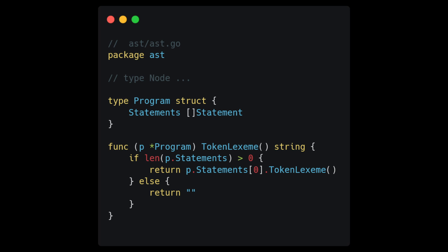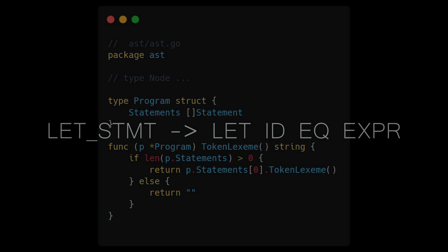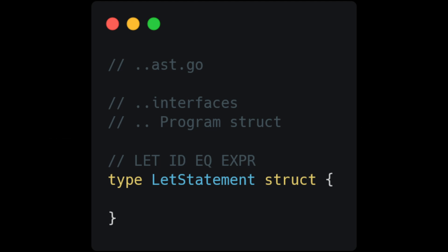Now remember the let statement grammar covered in the last video. A let statement is: let, identifier, equals, expression. We can represent this as an implementation of our statement interface — let's call it let statement. Looking at the grammar, we can determine what fields we would want to store in this class. We need a field for the identifier.